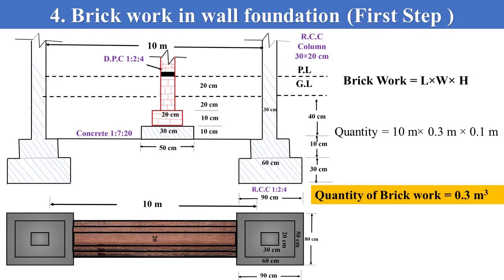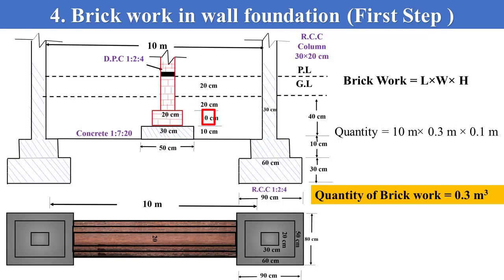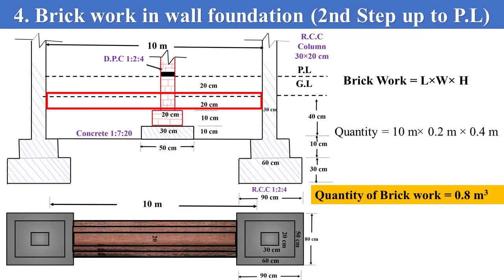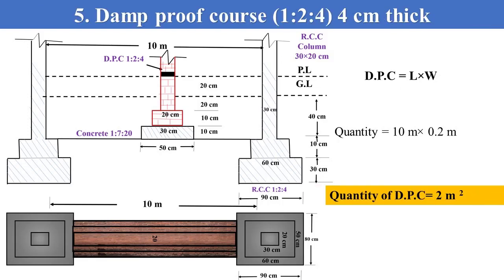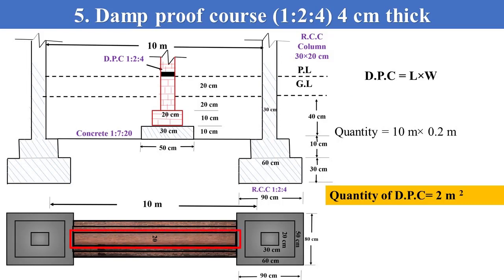For brickwork involved in the first step, multiply the first step brickwork length with width and height. Similarly, for the second step brickwork, multiply brickwork length with width and count the height up to the plinth level. The same method can be used to find quantities above the plinth level. For DPC, find the wall area at plinth level by multiplying the length with width to get the DPC quantity.